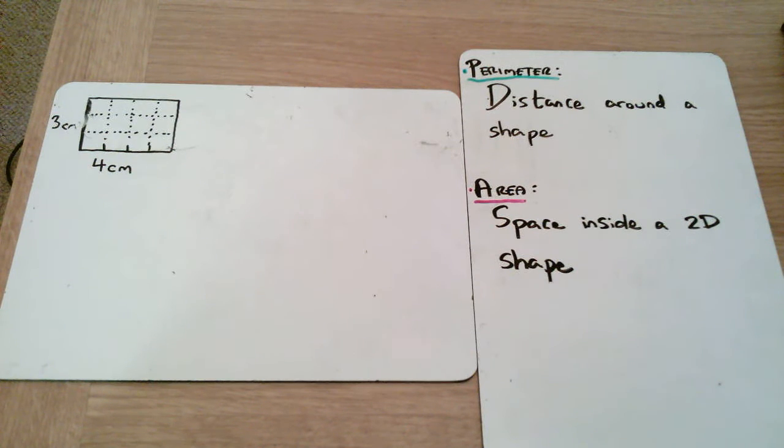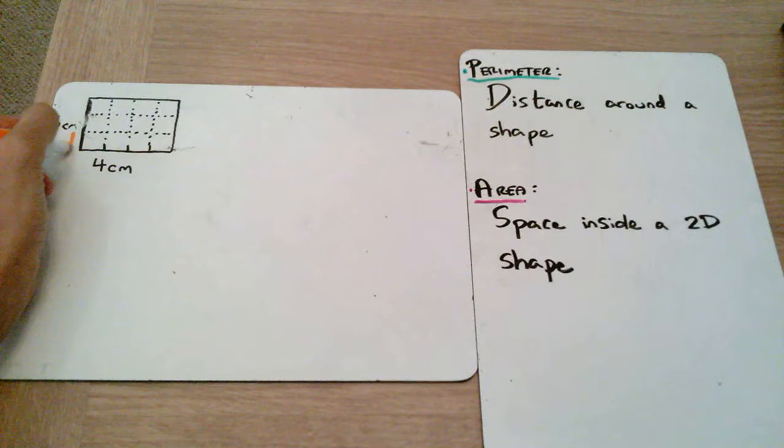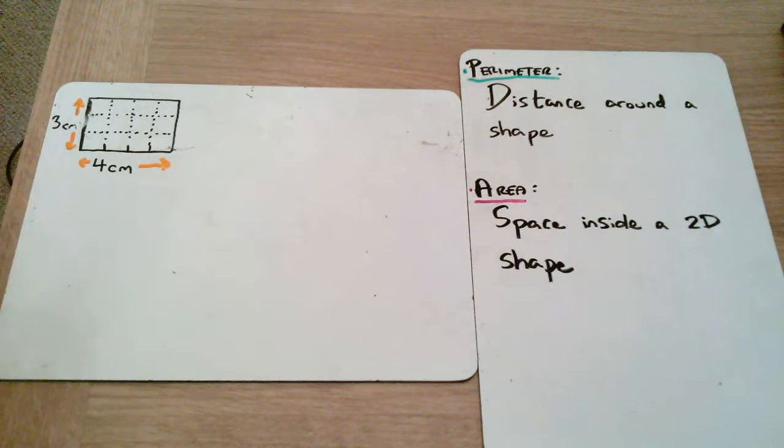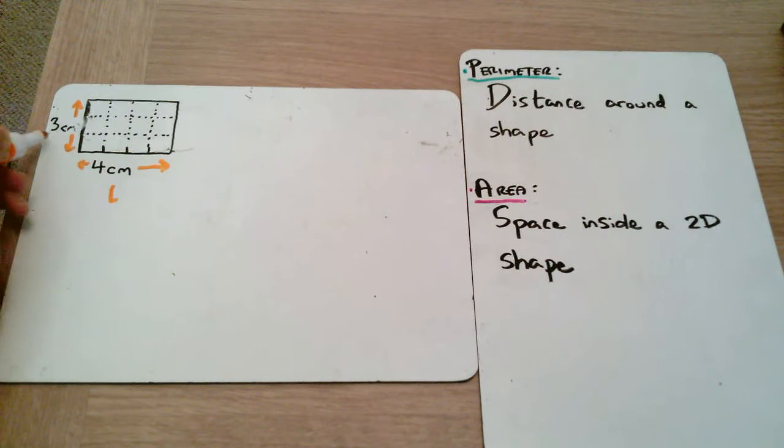In our rectangle over here, we can see that it has one length that is 3 centimeters and one length which is 4 centimeters. Now these actually have special names - one is called the length and one is called the width. The length of the rectangle is always the longer length, which in this case is the 4 centimeters, and the width is always the shorter distance, which is the 3 centimeters.